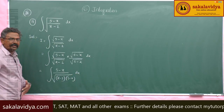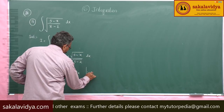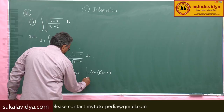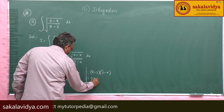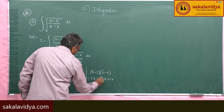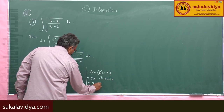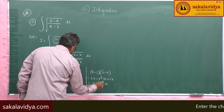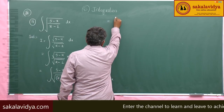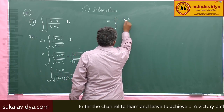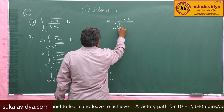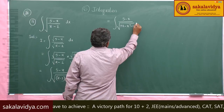Let us multiply (x minus 2) into (5 minus x). (x minus 2) into (5 minus x) is equal to 5x minus x squared minus 10 plus 2x, which is 7x minus x squared minus 10. Now, this can be written as integral of (5 minus x) by root of (7x minus x squared minus 10) dx.